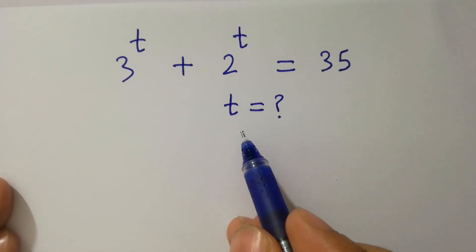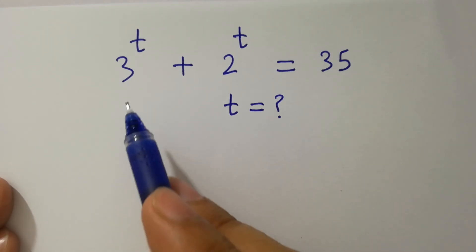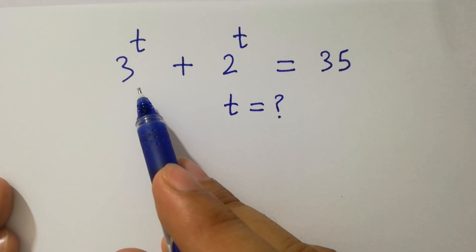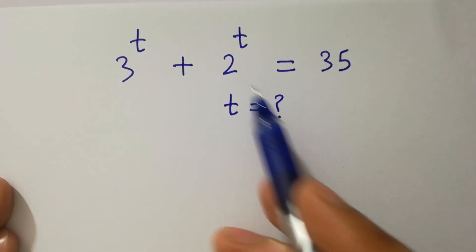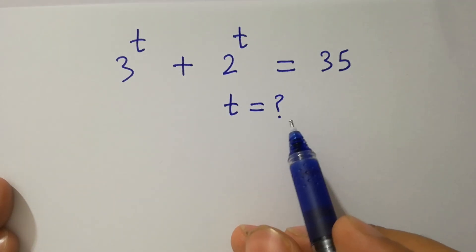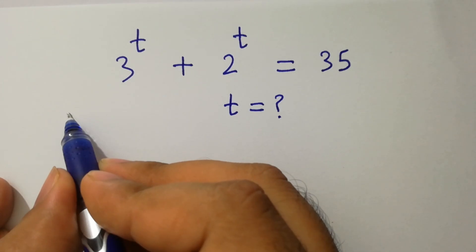Hello friends, find the value of t if 3 to the power t plus 2 to the power t equals 35. Let's have a solution.